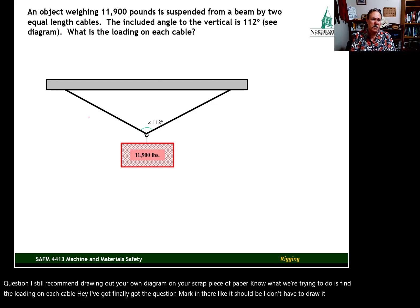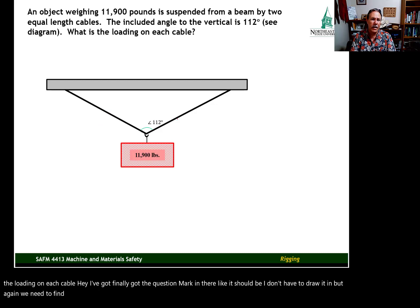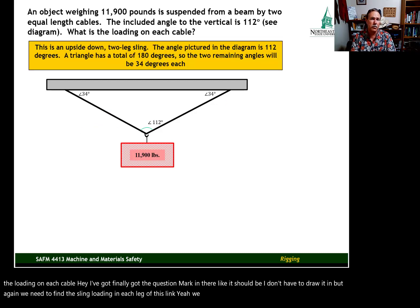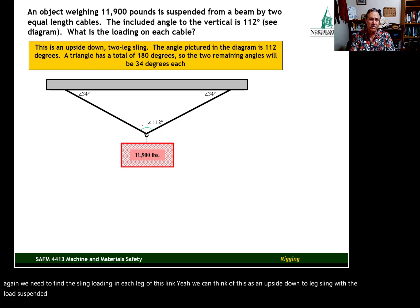We need to find the sling loading in each leg of this sling. We can think of this as an upside down two-leg sling with the load suspended from a beam by two cables. The angle in the picture diagram is 112 degrees. That will help us determine the angles to the horizontal.